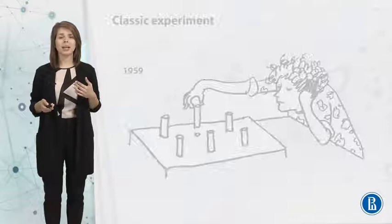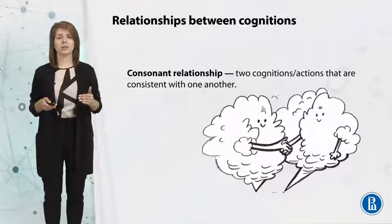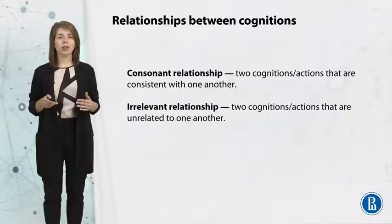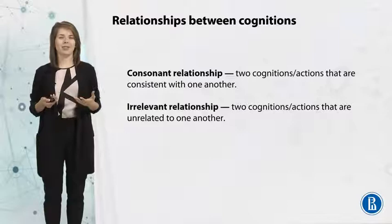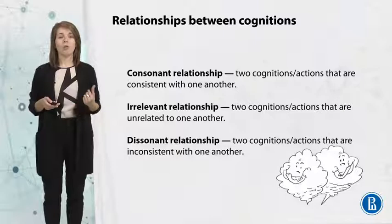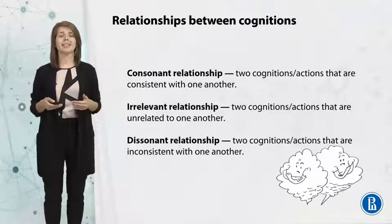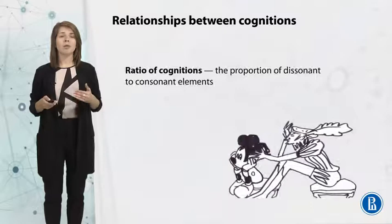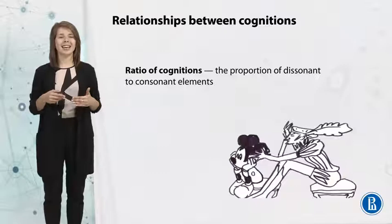Let's summarize the possible relationships between cognitions. The first is consonant cognition — everything is consistent and there is no cognitive dissonance. The second is an irrelevant relationship — the two cognitions are unrelated and don't bother us. The third is a dissonant relationship, which causes problems when two cognitions or actions are inconsistent with each other, and we try to find ways to eliminate that inconsistency.